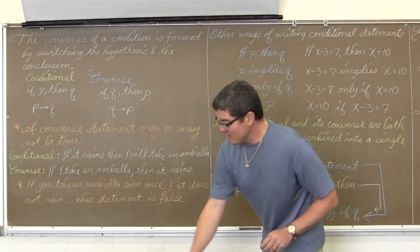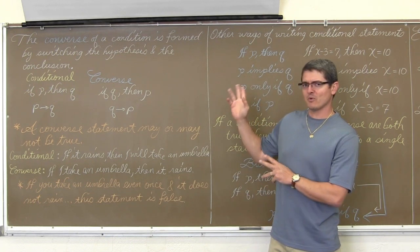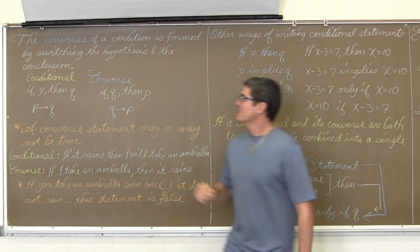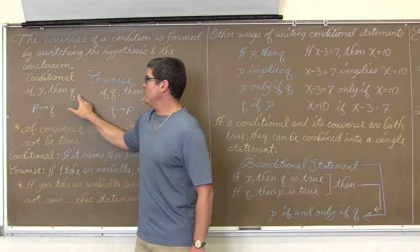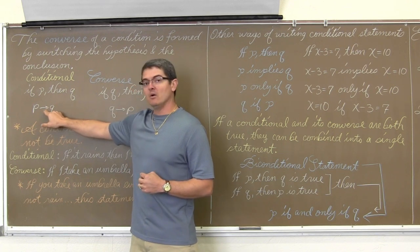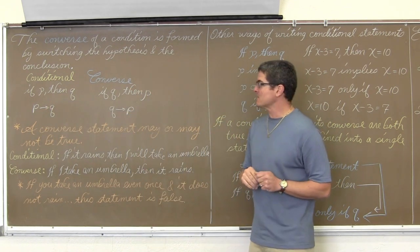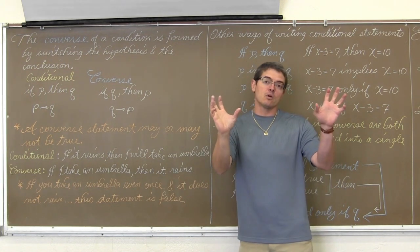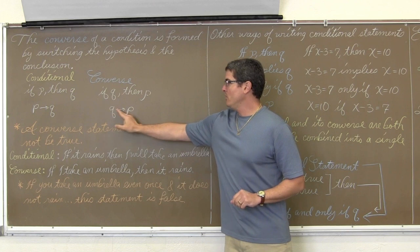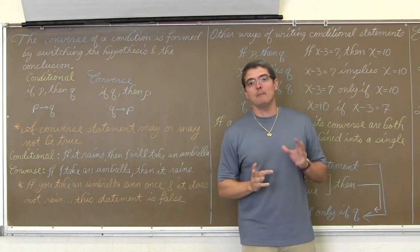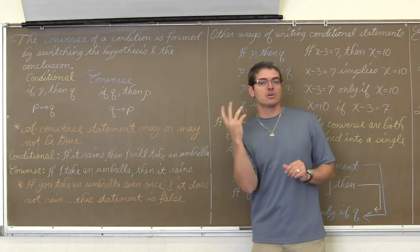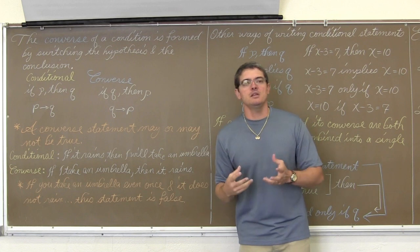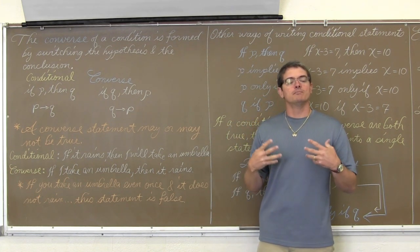The converse. The converse of a conditional statement is formed by switching the hypothesis and the conclusion. So if we have a conditional statement of "if P, then Q" — or your textbook might write P with an arrow Q — the converse is "if Q, then P." You just take the phrase after "if" and after "then" and swap them, giving you Q arrow P. A converse statement may or may not be true. You need to look at your original conditional statement, swap the if-then phrases, and see if logically the converse makes sense, or is it true or false.